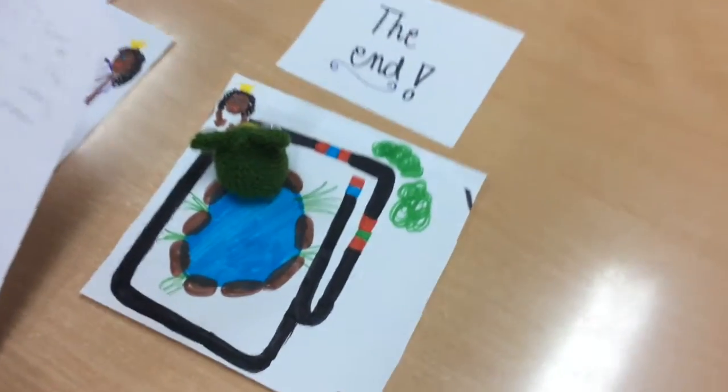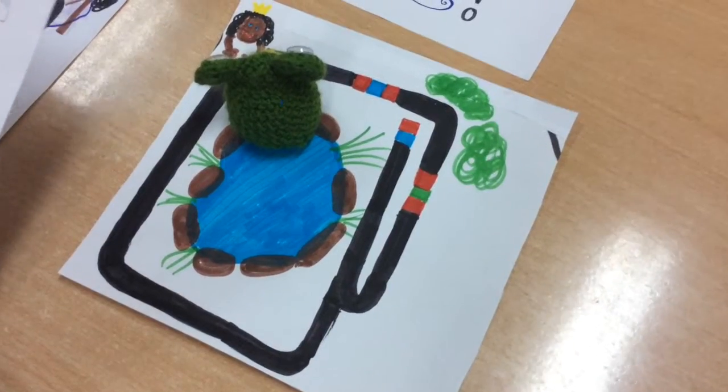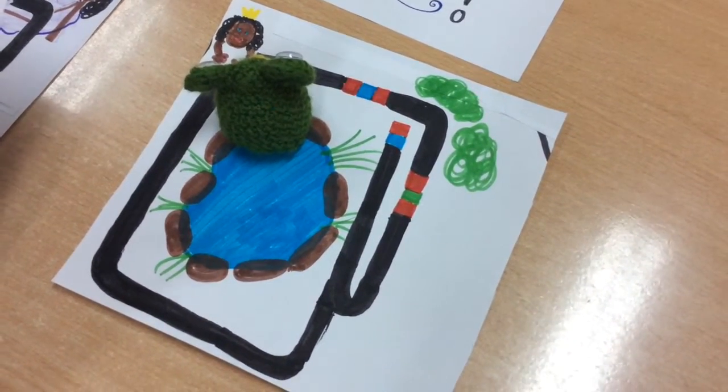The Princess and the Frog. Once upon a time, an ugly frog was swimming in the pond, in the garden near the royal palace.